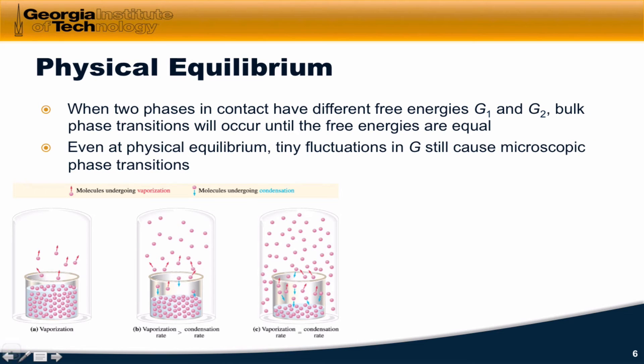Now, what about phases in contact? Well, when two phases in contact have different free energies, G1 and G2, we'll get bulk phase transitions until the free energies of the two phases are equal, and this is known as physical equilibrium.